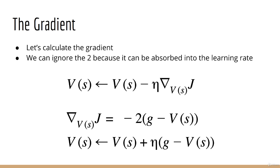If we plug this gradient into our gradient descent update and ignore the two, since it can be absorbed into the learning rate, we get back the exact update equation we would use for the exponentially decaying average.